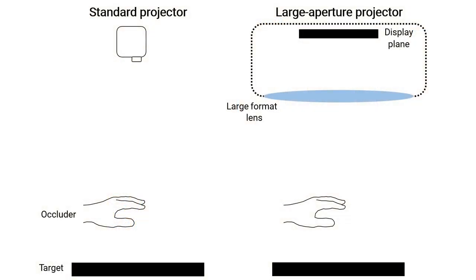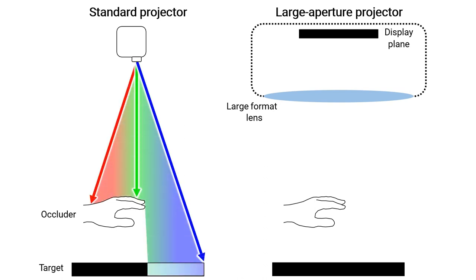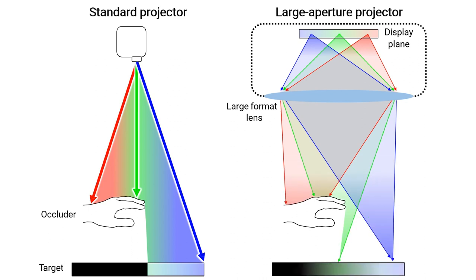Surrounding the projection target, we propose the use of a custom projector with a much larger aperture than existing off-the-shelf projectors to illuminate the environmental surfaces surrounding the projection target. Aperture size of a projector affects the emitted ray intensity and the appearance of a shadow. As shown on the left, a standard projector is a point light source producing a high luminance ray and a hard shadow. As shown on the right, the proposed large aperture projector is an area light source creating a low luminance ray and a soft shadow.